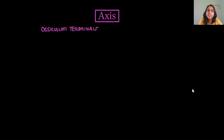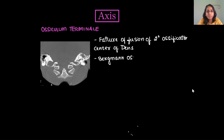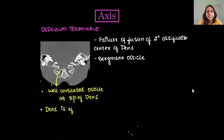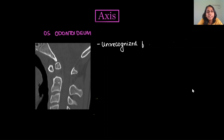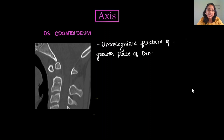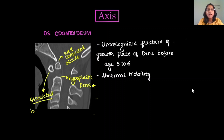For axis anomalies, ossiculum terminale is due to failure of fusion of the secondary ossification center of the odontoid process, also called the Bergman ossicle. A well-corticated ossicle is seen at the tip of the dens; the dens is of normal height and usually in the midline. Os odontoideum is thought to result from an unrecognized fracture of the growth plate of the dens before age 5 to 6. It shows a well-corticated ossicle with a hypoplastic dens and abnormal CVJ mobility, usually associated with a hypertrophied anterior arch of the atlas.